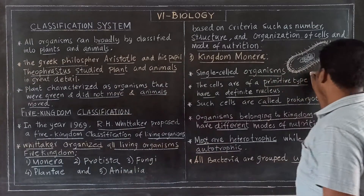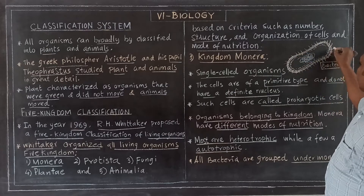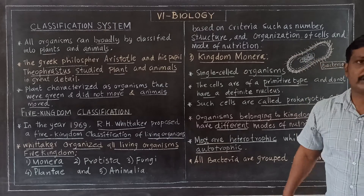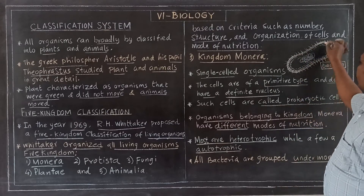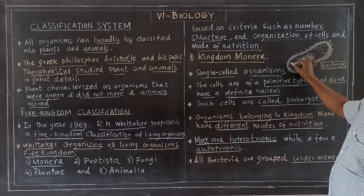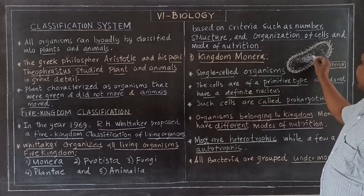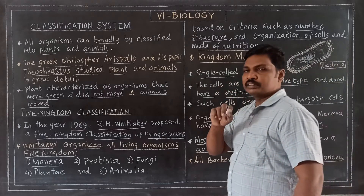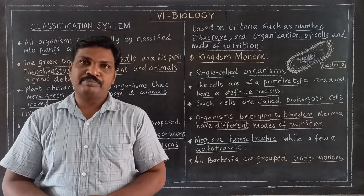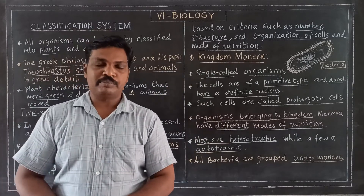In the diagram, this is the outer area. This is the cell membrane. The hair-like structure projection is the outer membrane. This is the cytoplasm. They do not have a definite nucleus — the nucleus is not membrane-bound. It does not have a definite shape.